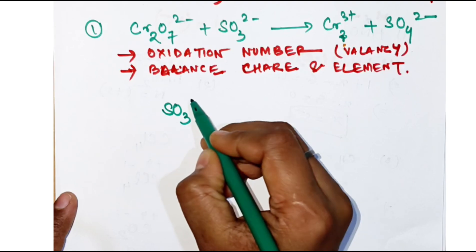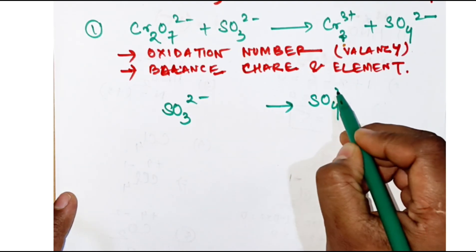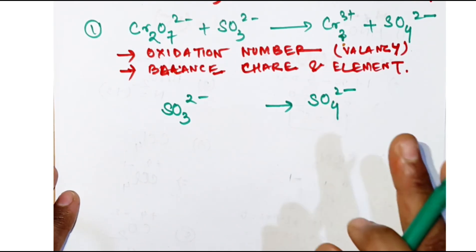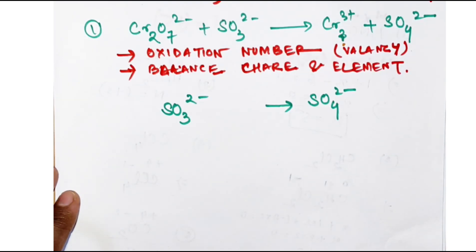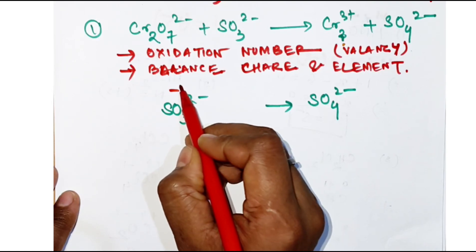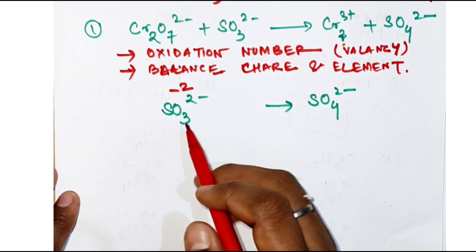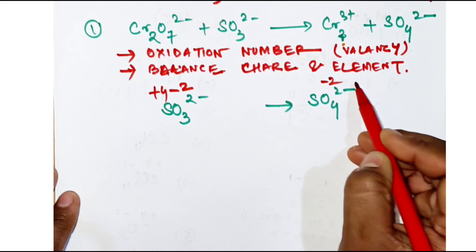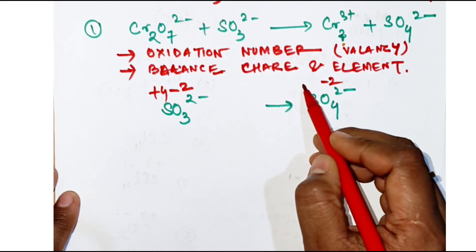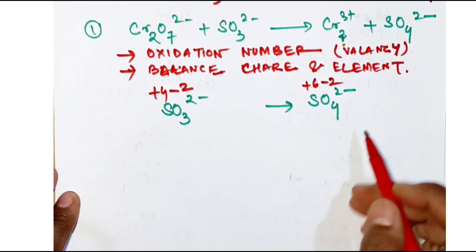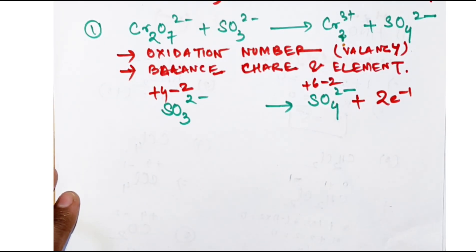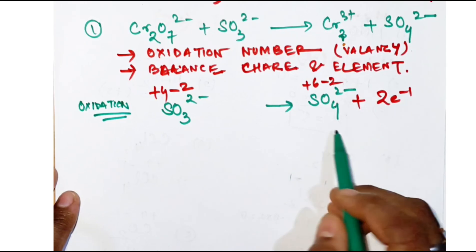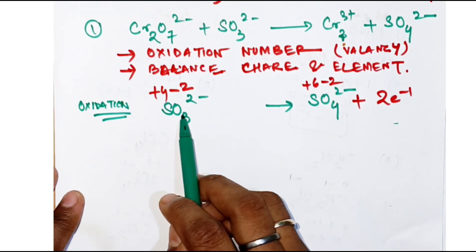We take the oxidation half-cell first: SO₃²⁻ forming SO₄²⁻. Find the oxidation number — oxygen valency is minus 2, so 3 oxygens give 6 minus 2, which means sulfur is plus 4 here. In SO₄²⁻, 4 oxygens give 8 minus 2, so sulfur is plus 6. It is going from plus 4 to plus 6, losing two electrons. This is the oxidation half-cell.